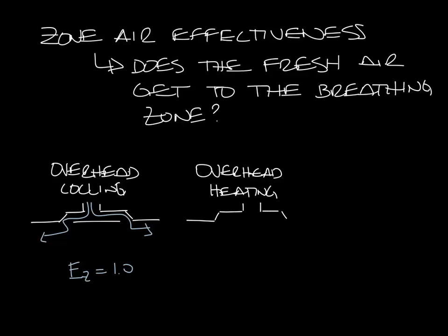On the other hand, overhead heating depends on a couple things. So again another diffuser, this time we're in heating. If your temperature differential from the supply air to the room temperature delta T is less than 15 degrees, so say 90 degree air in a 75 degree space, then your E sub Z is 1.0. Your ventilation effectiveness is the same as overhead cooling.